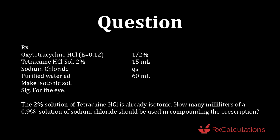In this second question, you have a prescription with oxytetracycline hydrochloride — A value 0.12, concentration 0.5%. You have tetracaine hydrochloride solution 2%, 15 ml. QS with sodium chloride to make isotonic, then add purified water to a total volume of 60 ml — isotonic solution for the eye. The 2% tetracaine hydrochloride solution is already isotonic. How many milliliters of a 0.9% solution of sodium chloride should be used?